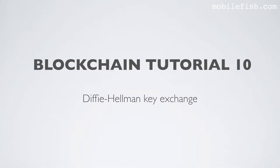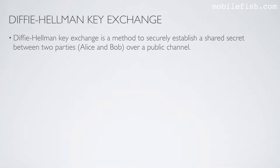In this video I will explain how the Diffie-Hellman key exchange works. Diffie-Hellman key exchange is a method to securely establish a shared secret between two parties, in this example Alice and Bob, over a public channel.